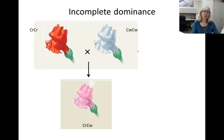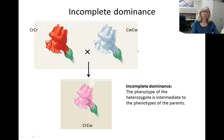The definition of incomplete dominance is that the phenotype of the heterozygote is intermediate to that of the parents, but this doesn't explain the biology behind the system. So let's take a look at that.